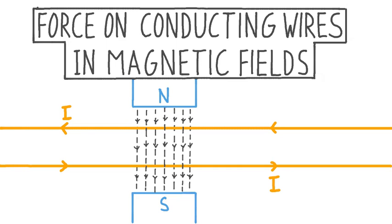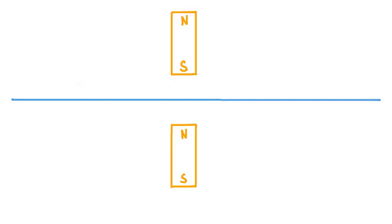We can start out by considering just what are the conditions needed for such a force to exist. Say that we have a length of conducting wire, but no current is in the wire. Under these conditions, we know that no magnetic or electric force will be experienced by the wire. But then, say that we take a couple of bar magnets and put them near this wire, so the north pole of one faces the south pole of the other. By doing that, we set up a magnetic field that runs from the north pole to the south pole.